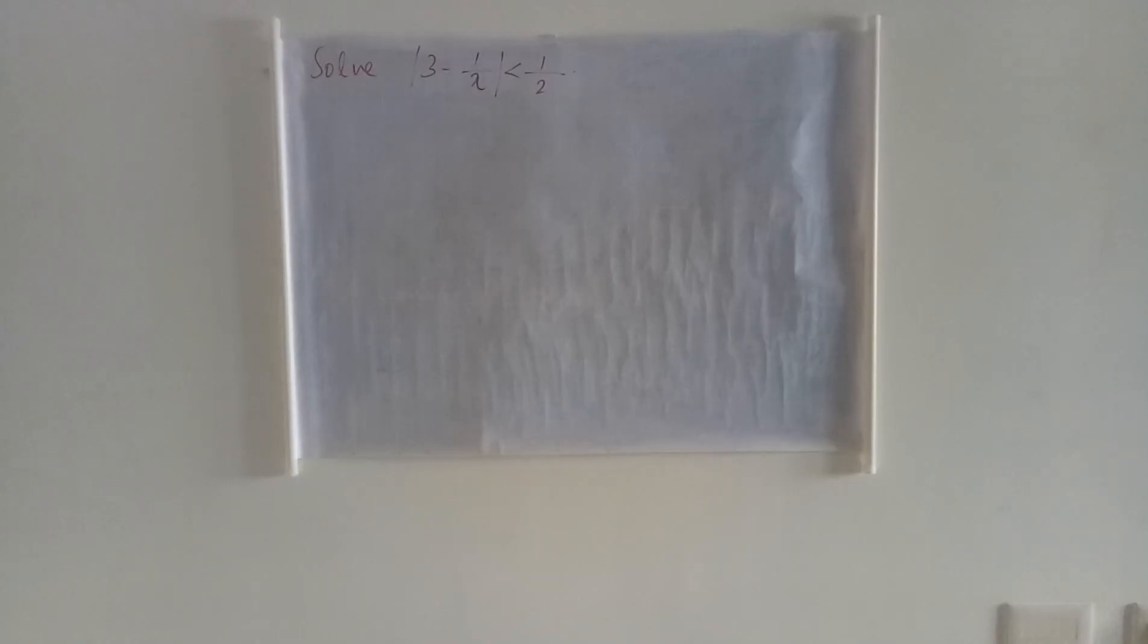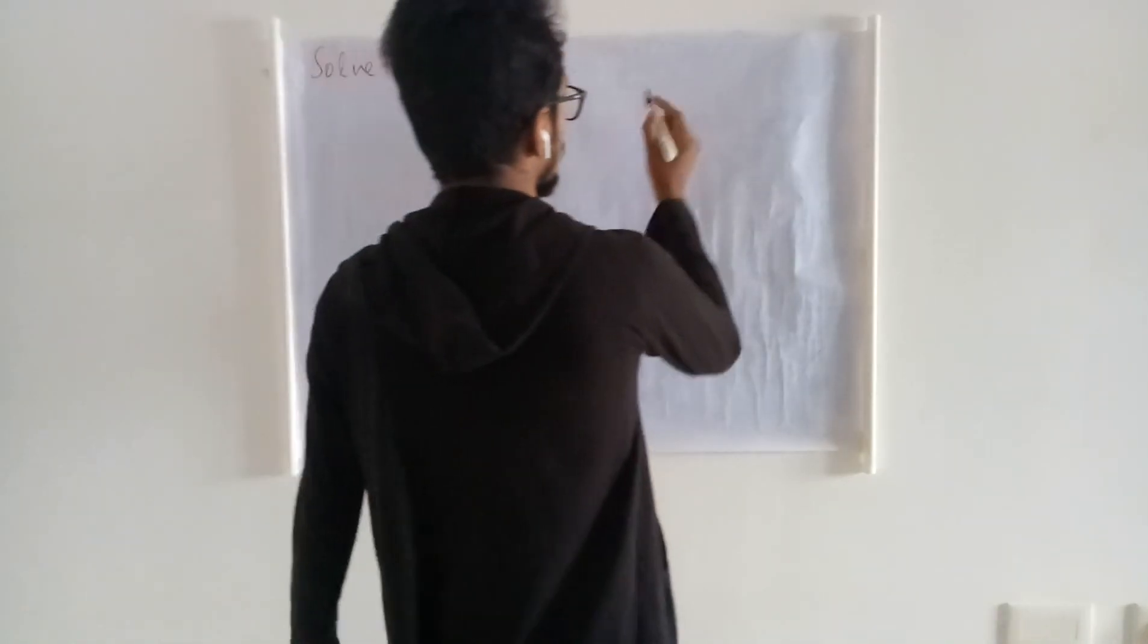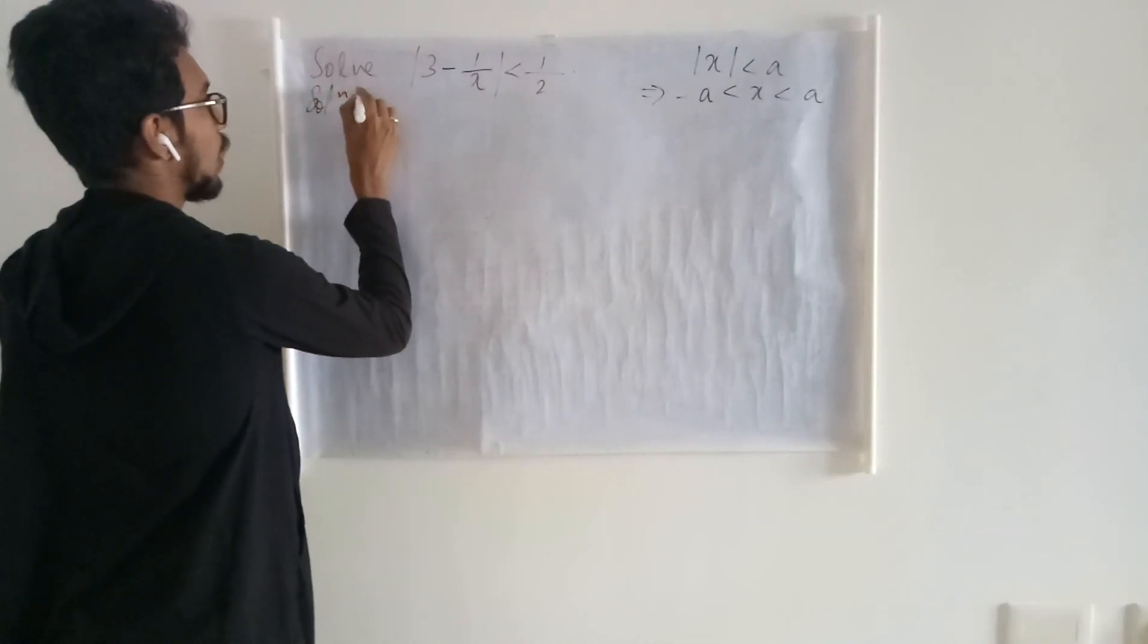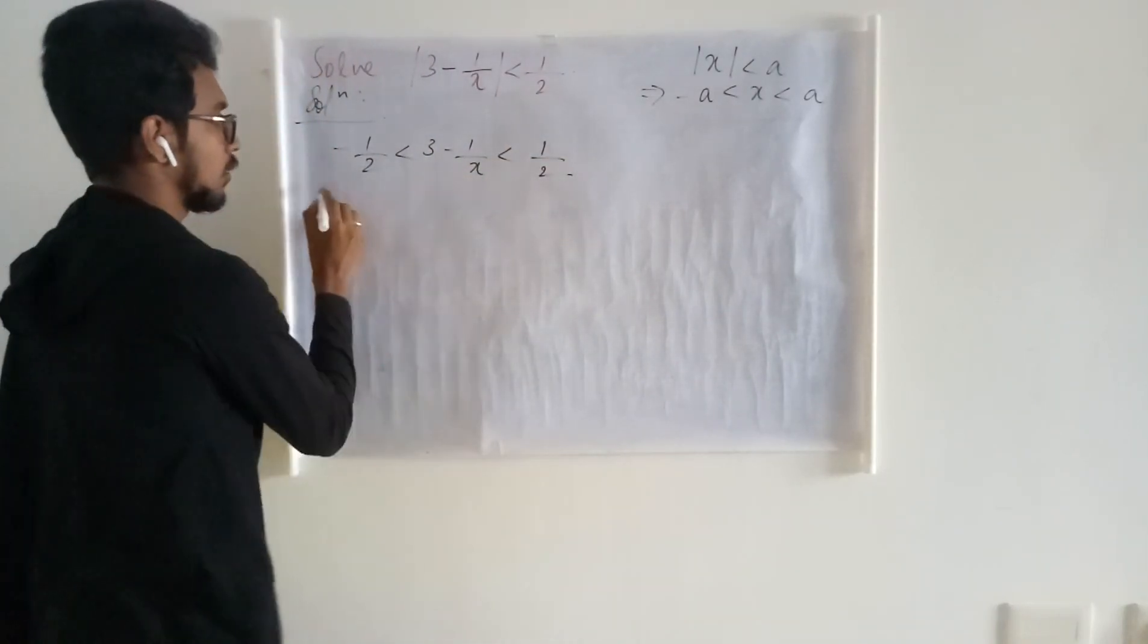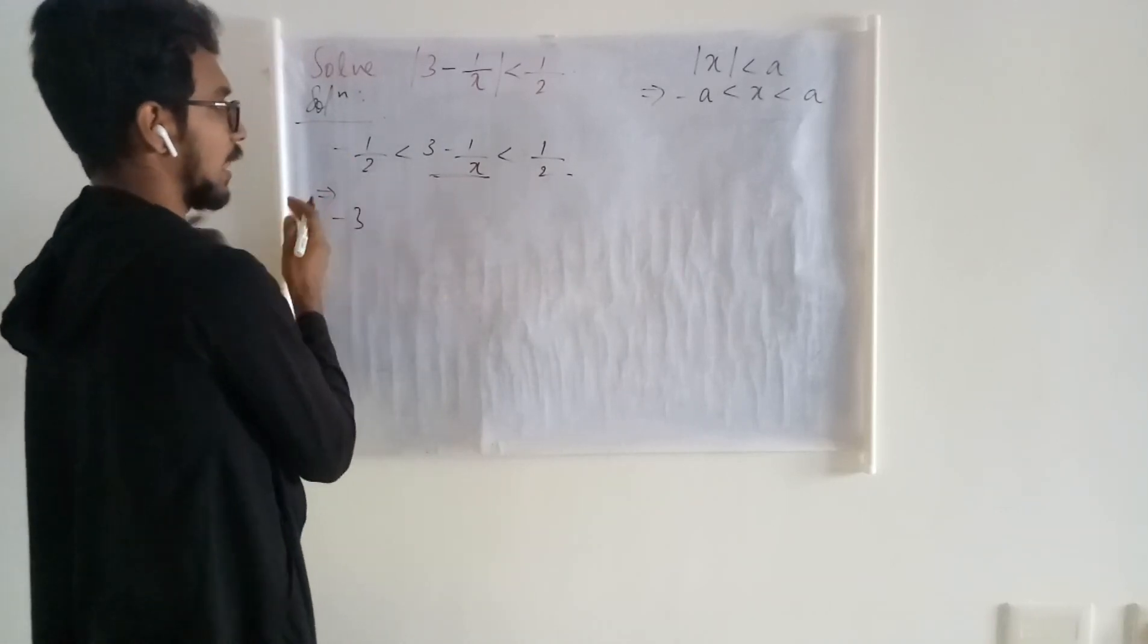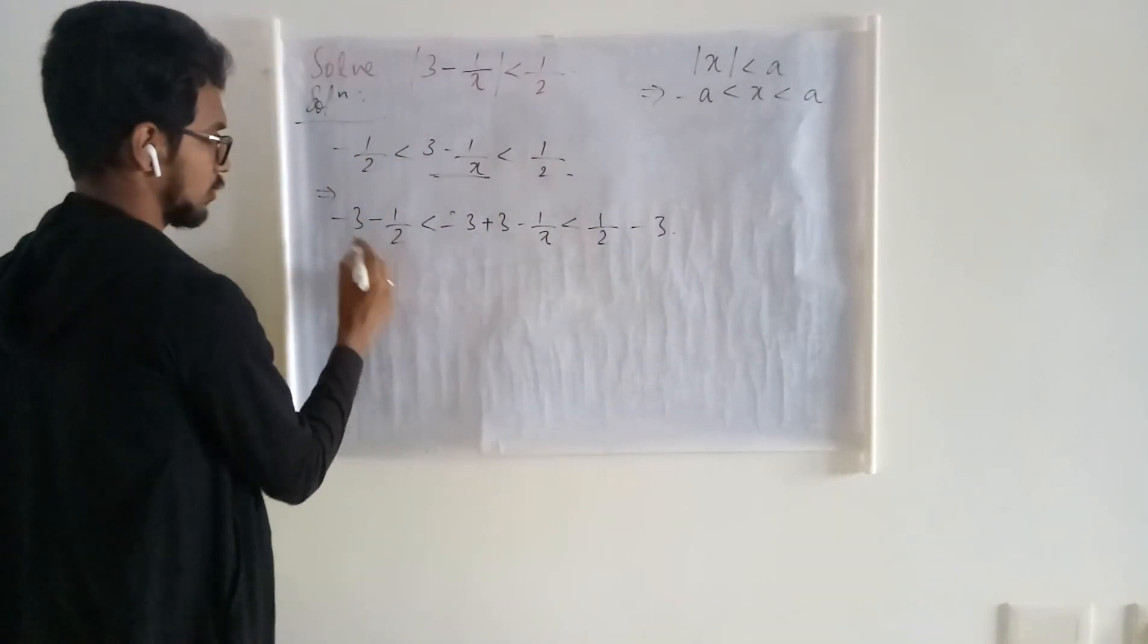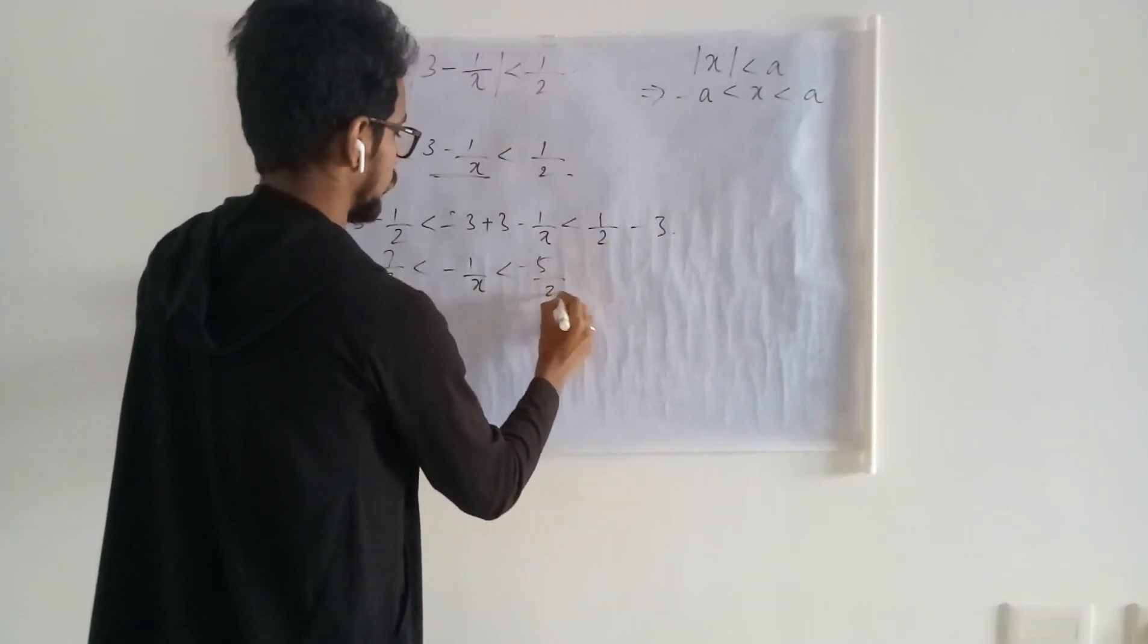Next, we are going to solve this kind of inequality. Absolute value of 3 minus 1/x is less than 1/2. Whenever you are given this kind of relation, this tells you that x lies between minus a and a. So applying the same here, what you are going to get is that minus 1/2 is less than 3 minus 1/x, which is less than 1/2. You have to have only the x part here. So I am adding minus 3 on all the sides. Minus 3 minus 1/2, minus 3 plus 3 minus 1/x, less than 1/2 minus 3. So this is going to be minus 7/2, and this is minus 1/x, and this is minus 5/2.